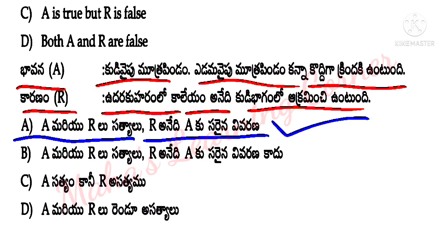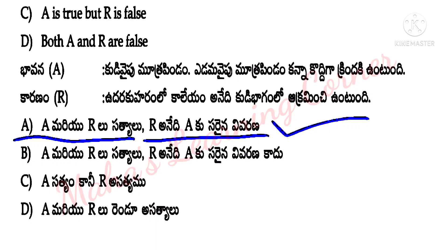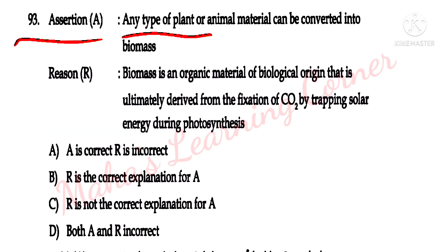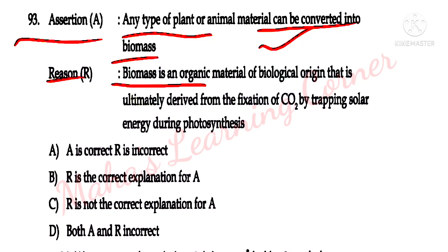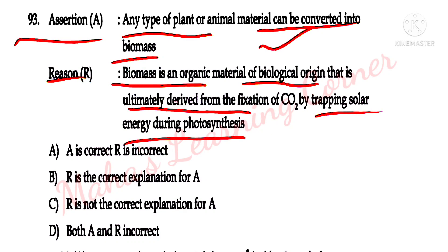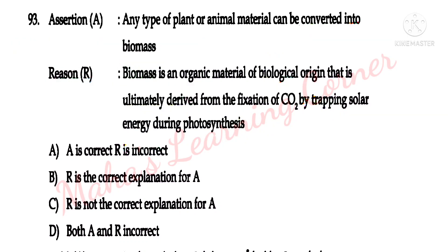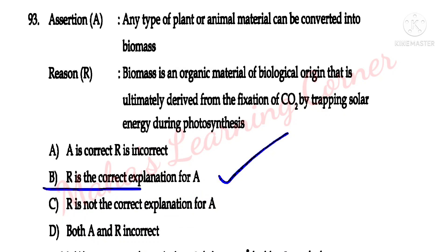Assertion A: Any type of plant or animal material can be converted into biomass. Reason R: Biomass is an organic material of biological origin that is ultimately derived from the fixation of CO2 by trapping solar energy during photosynthesis. Both are correct. Option B is the correct answer — R is the correct explanation for A.